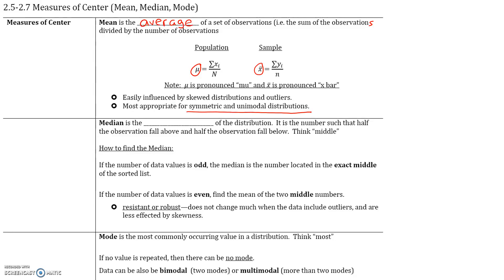The median is the midpoint of the distribution. It is a number such that half of the observations fall above and half fall below. So think of the middle for median. How do you find the median? First, we must sort the list from smallest to greatest. If the number of data values is odd, the median is the number located in the exact middle of the sorted list.